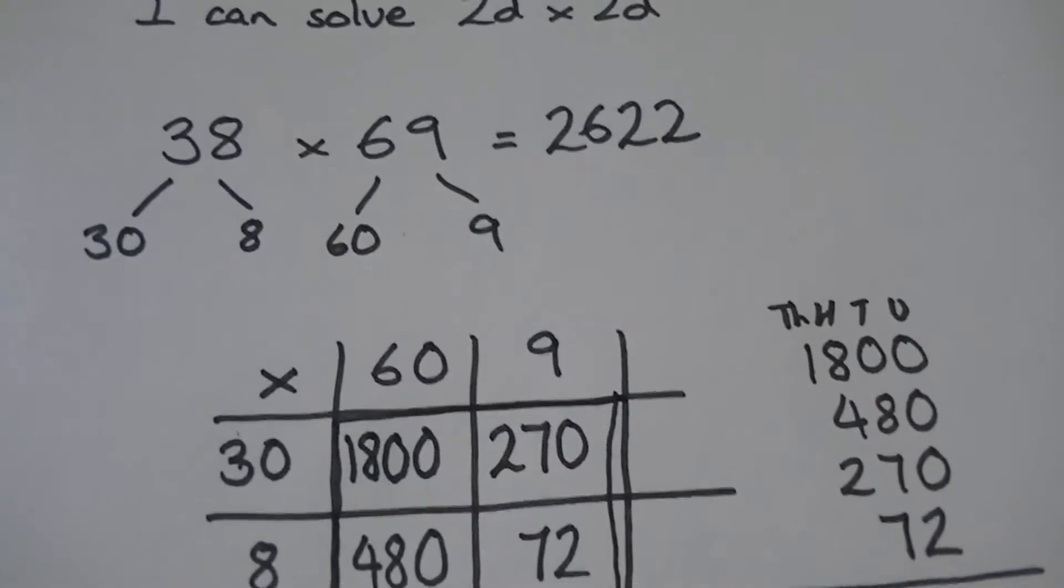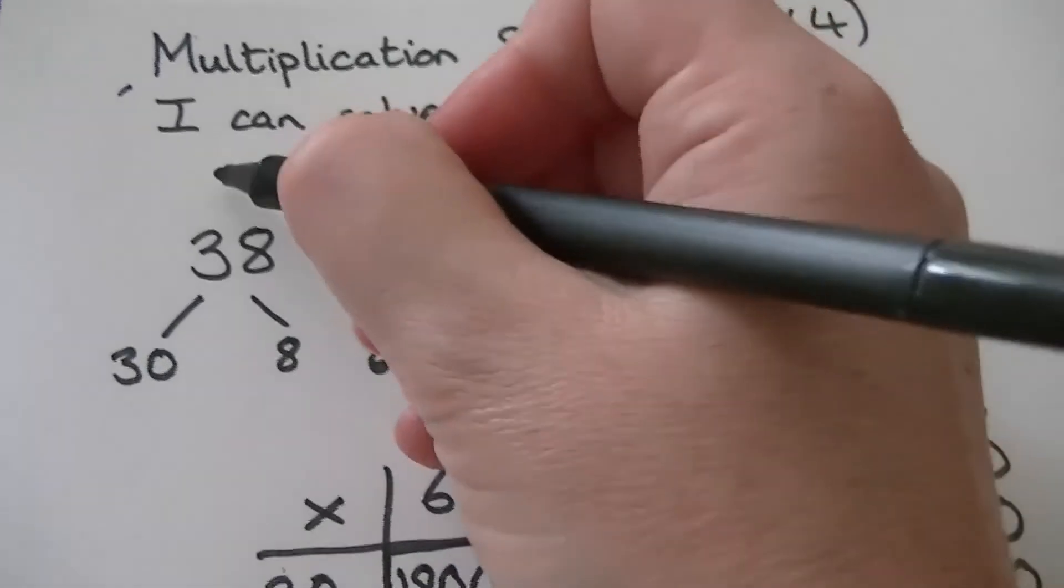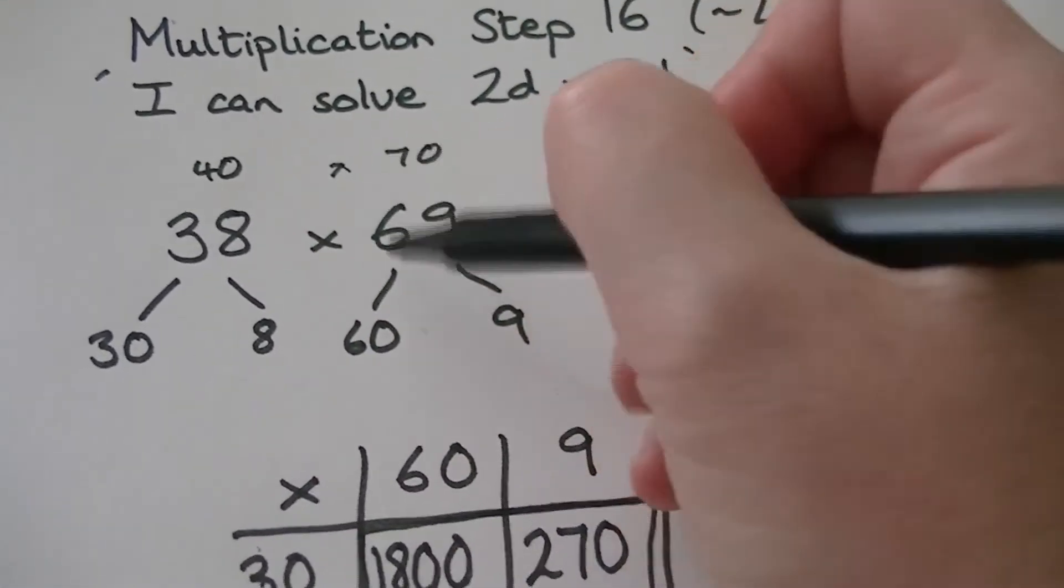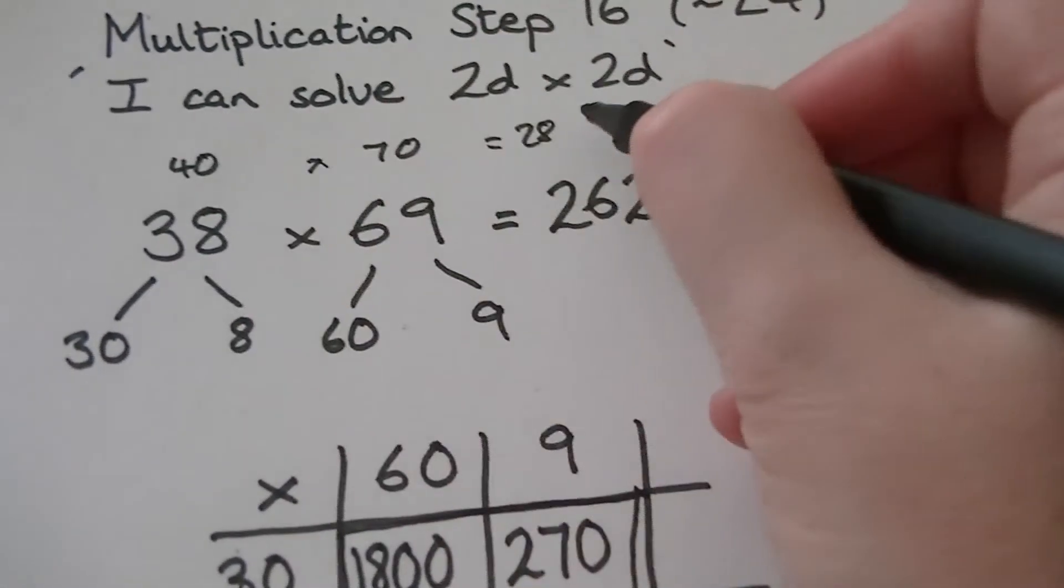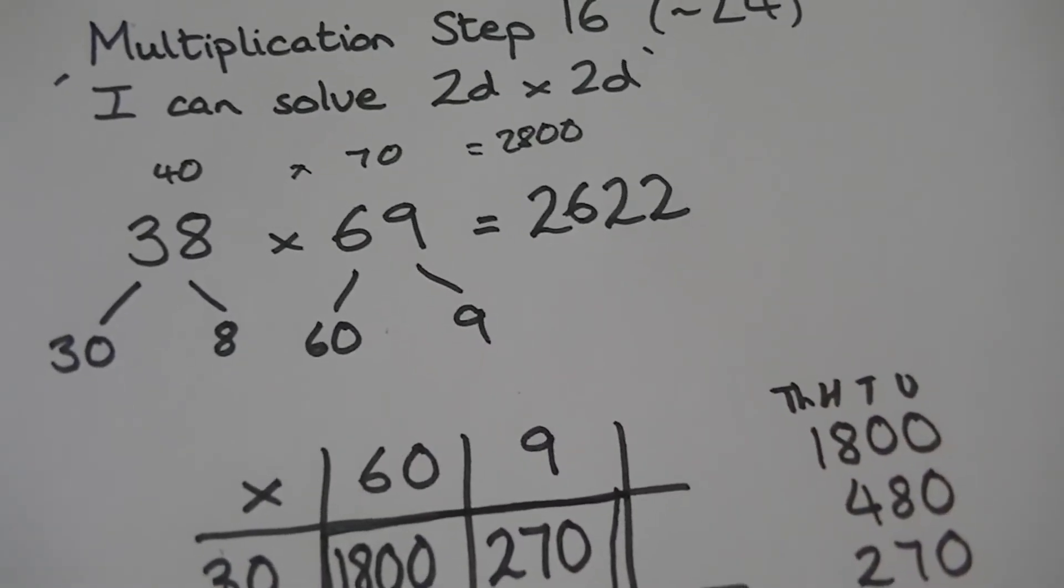To check that I'm probably right, what I could do is say well 38 is virtually 40 and 69 is virtually 70. Four sevens are 28 and add the two zeros, so my 2622 is probably right.